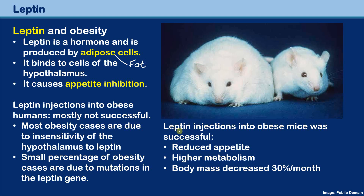In contrast, leptin injection into obese mice was successful. The mouse had a genetic disorder and was not able to produce leptin, so its appetite was not reduced. Injecting leptin resulted in reduced appetite, a higher metabolism with increased cell respiration rate, more fat burned, and a body mass decrease of around 30% per month.